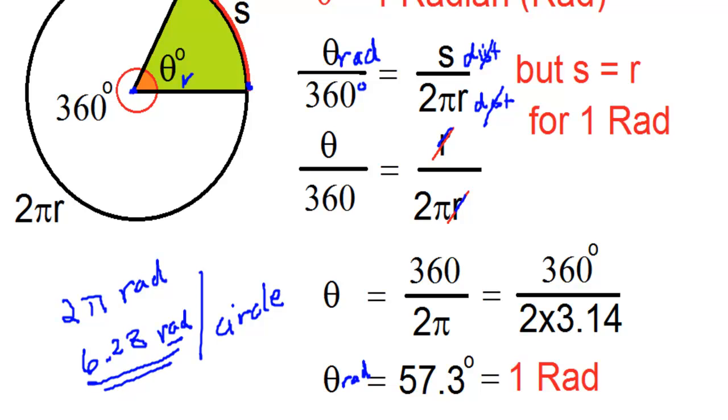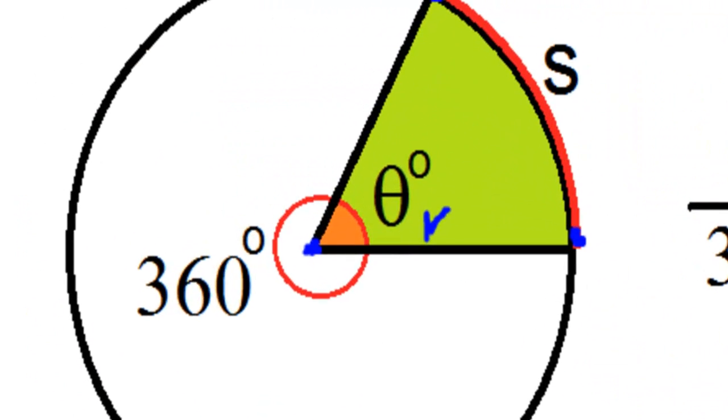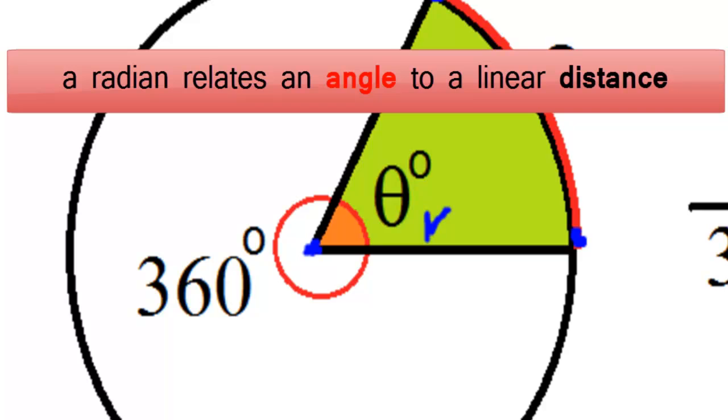but if you substitute the word radian with radius, that would be 6.28 times whatever the radius is. If it's 10, then it's times 10. If it's 5, then it's times 5. That's how radians link angles to distance.